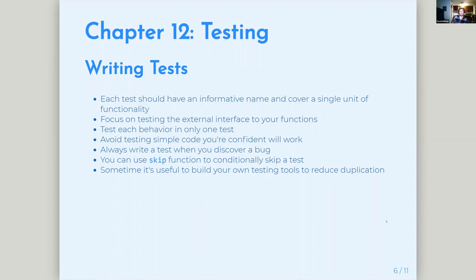Sometimes it's useful to build your own testing tools to reduce duplication. If you're running certain patterns over and over in your test files, you can define new helper functions. You can also create custom expectation functions if you're using certain patterns frequently — like if you're constantly testing that something's equal to some big object, you can write a custom expectation function for that.